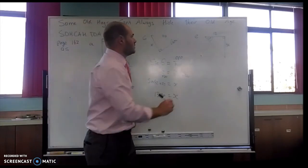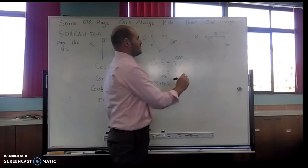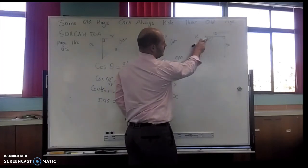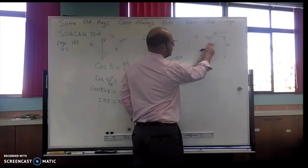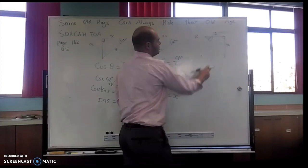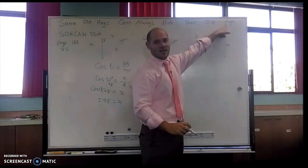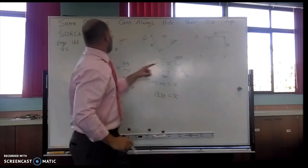Lucky last, my tangent. So I have a look. Here I've got opposite and I've got adjacent. I don't know what my hypotenuse is. So opposite, adjacent, O and A. TOA, I've got my opposite and adjacent.